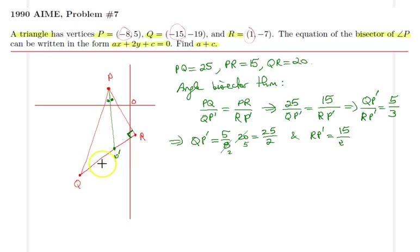Now that I know these line segments, what I can do, I can find the coordinates of P prime. Remember how to find the coordinates of P prime. If P prime is the midpoint of Q and R, we give equal weight. In this case, because I know this distance is like 5x and this distance is like 3x, what I can do, I can give a weight of 3 here, and then I can give a weight of 5 here. You can think of Archimedes principle.